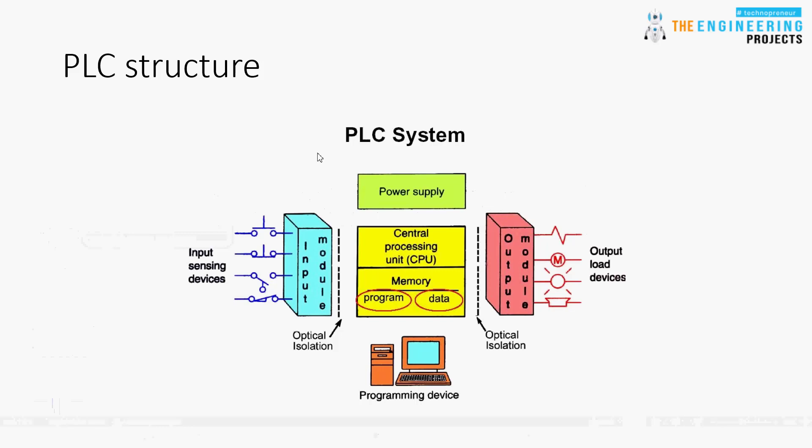The first component is the input module. On the other side is the output module, connected to your external world of outputs - everything you name as an output actuator: valves, motors, indicator lamps - all these devices are connected to your output module. Similarly, just as we have digital and analog inputs, we also have digital and analog outputs. When you run a motor or light an indicator lamp, it's only on or off, so that is a digital output. But if you want to open a valve halfway, or to 70%, 90%, or 100%, that is an analog output.